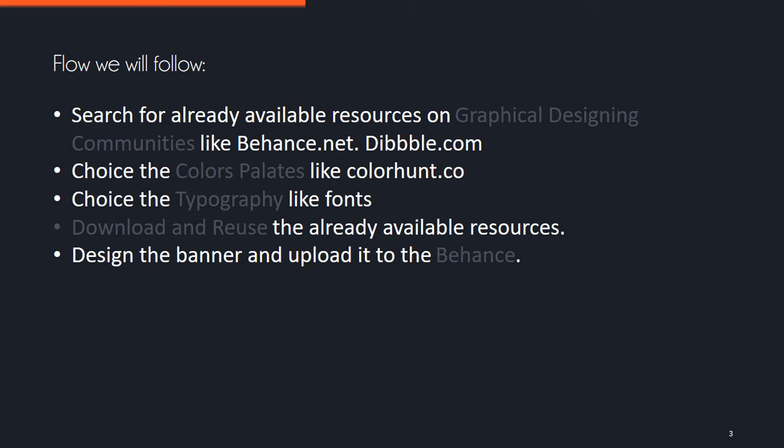This is the flow of the tutorial: first we will do research on graphical designing communities like behance.net or dribbble.com. Then we will choose color palettes from something like cohon.co. Then we choose typography, since fonts are very important in product or banner designing. Then we will download and reuse already available resources to save time, make the project more attractive, design the banner, and upload it to the Behance community.